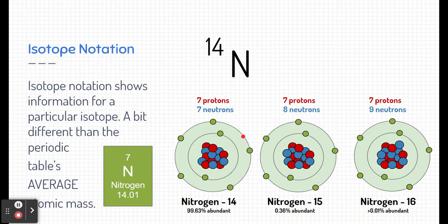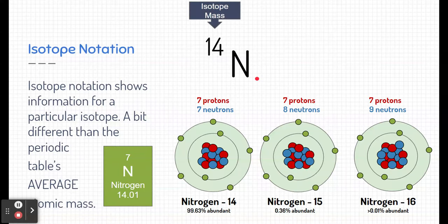This is a little bit different than what we see on the periodic table. Remember, this shows us the atomic number and the average atomic mass. Here, this is a very specific nitrogen with a very specific mass, and so this is the isotope mass we put in the upper left-hand corner of the symbol of nitrogen.